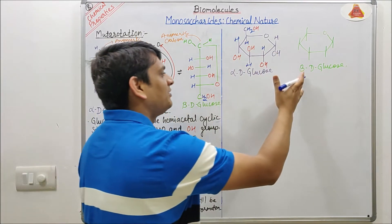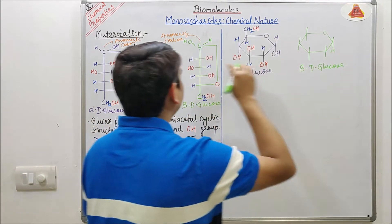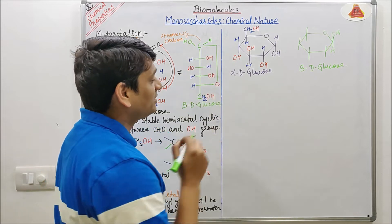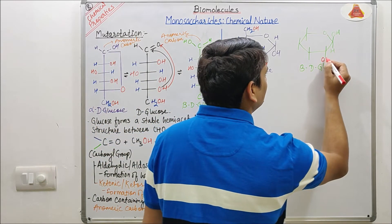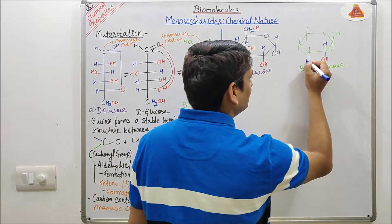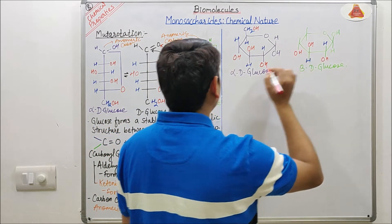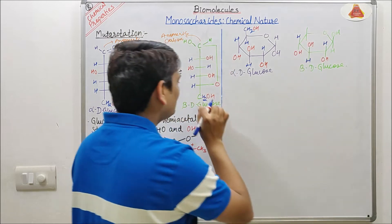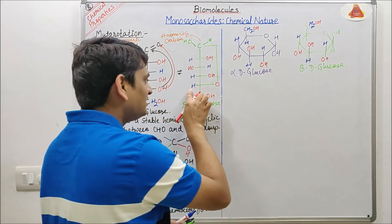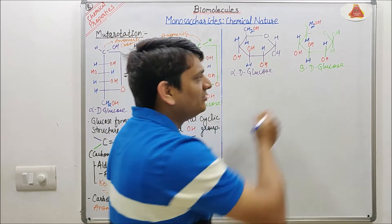Similarly for beta D-glucose: at C-1 H is on the right side so it is below, OH is on the left so it is above. At C-2 OH is on the right so it is below; H is above. At C-3 H is below; OH is above. At C-4 OH is below; H is above. CH2OH is always above and H is always below. These are the cyclic structures of alpha D-glucose and beta D-glucose.